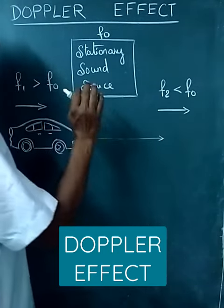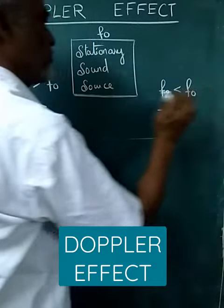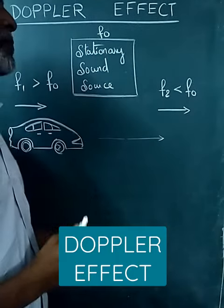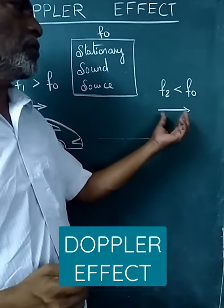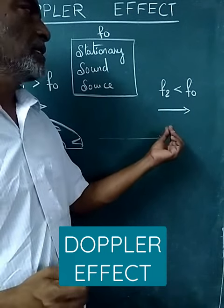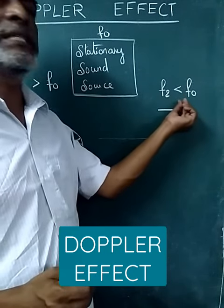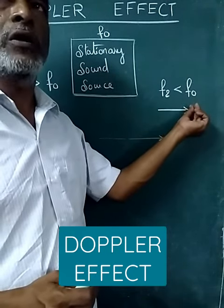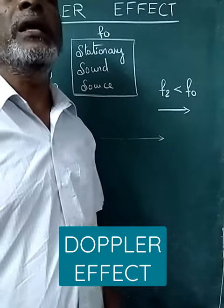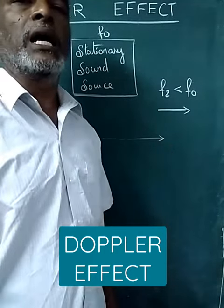Once the car recedes away from the stationary sound source, the frequency decreases, since F2 is less than F0 as heard by the observer in the car.